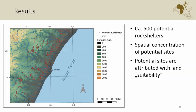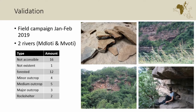The resulting map identified approximately 500 potential rock shelters in the area. Quite nicely, they are more or less concentrated, so you could visit a valley section and sample them within one or two days depending on how detailed you want to be. The sites are attributed with suitability scores and all information from the topographic indices. This year we also conducted a validation campaign, sampling two rivers — one south and one north of the Tongati, the river of the Sibutu valley.